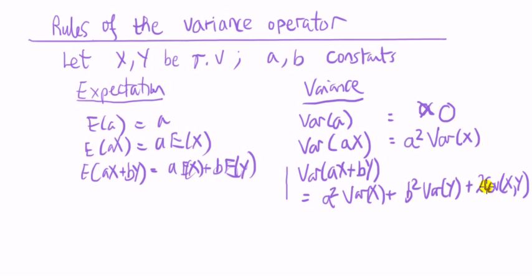Because if x and y are independent, the covariance, which is a number, this covariance turns out to be zero. So you'll typically just see the variance of ax plus by equal to a squared times the variance of x plus b squared times the variance of y, but that's only true if the covariance of x and y is zero.